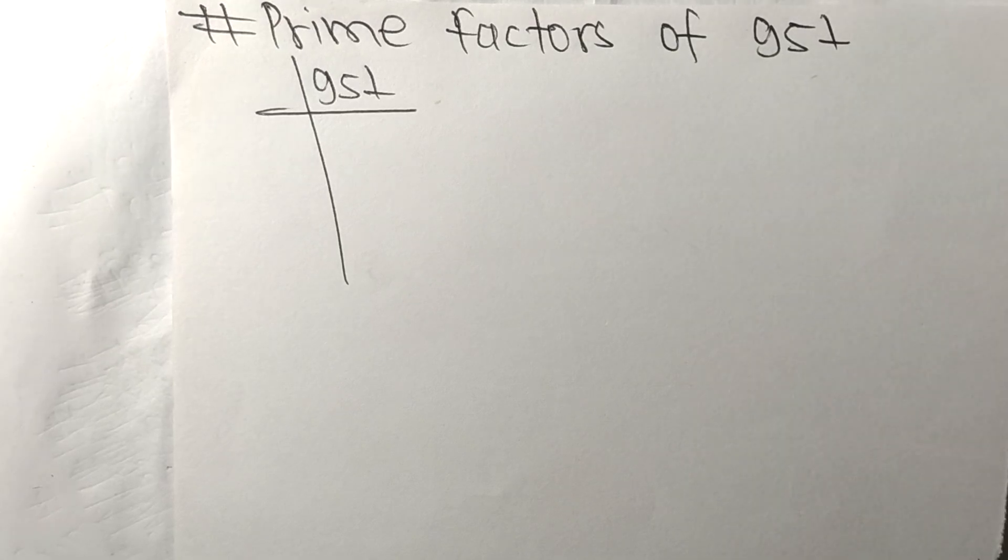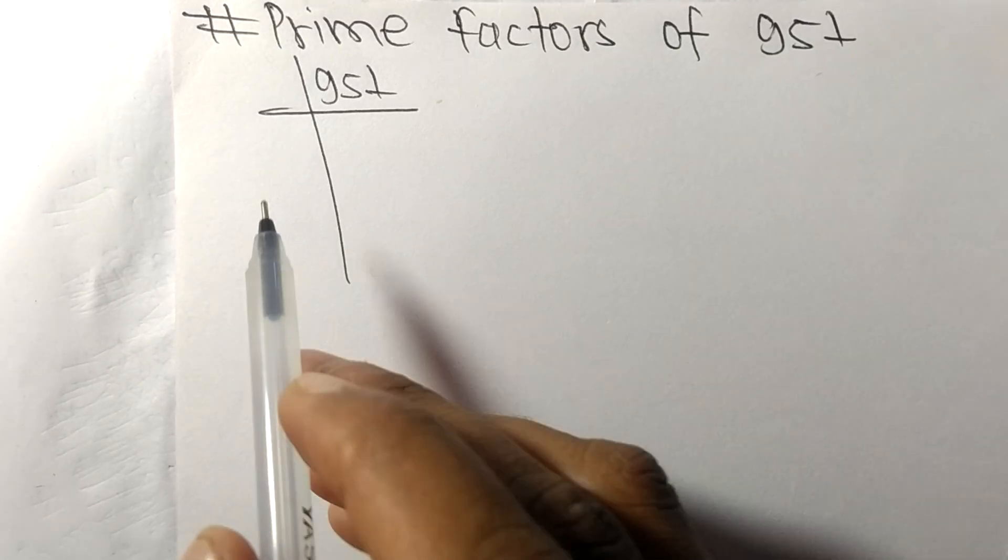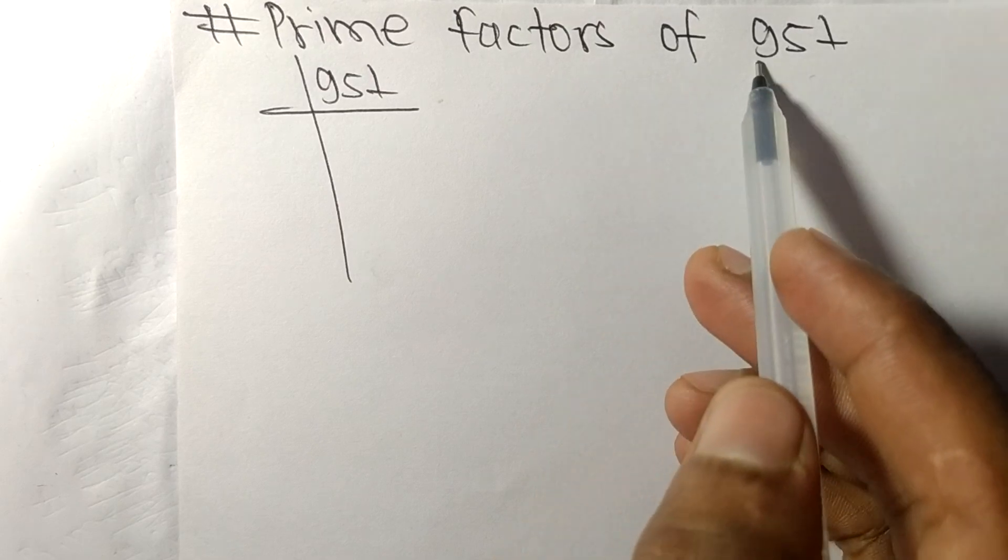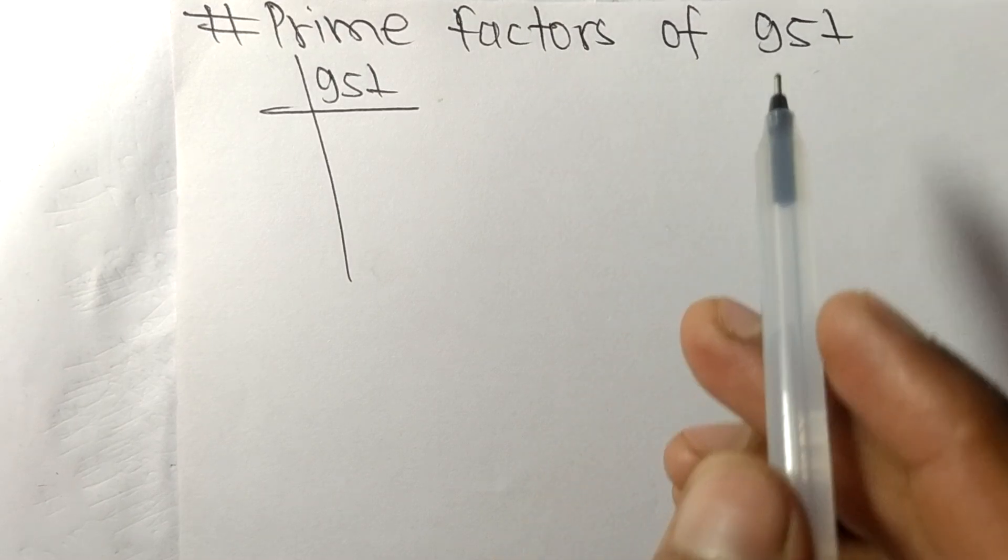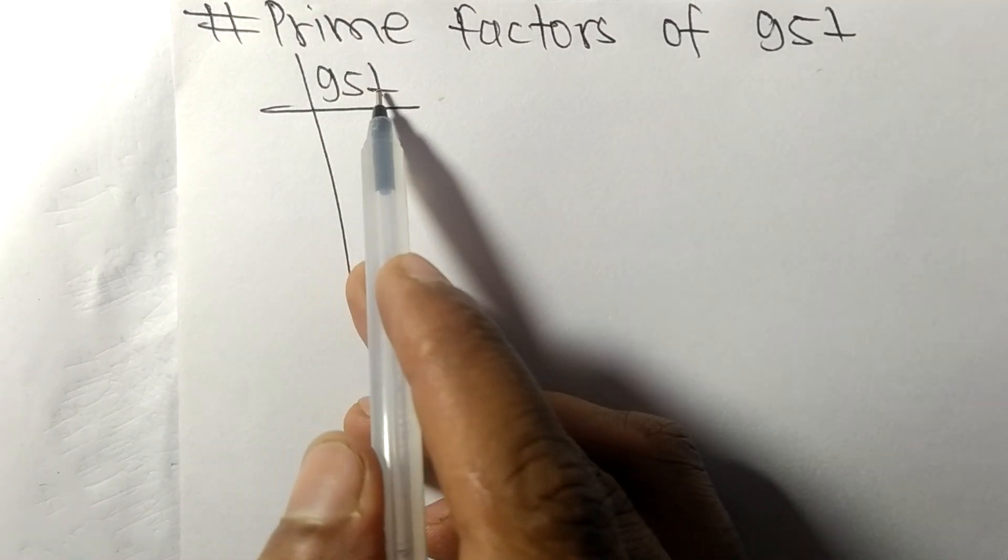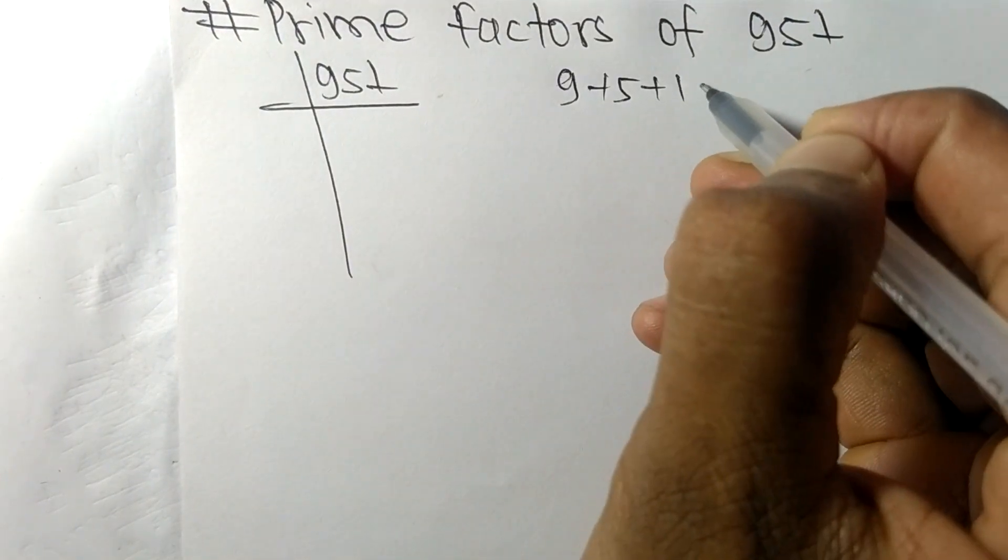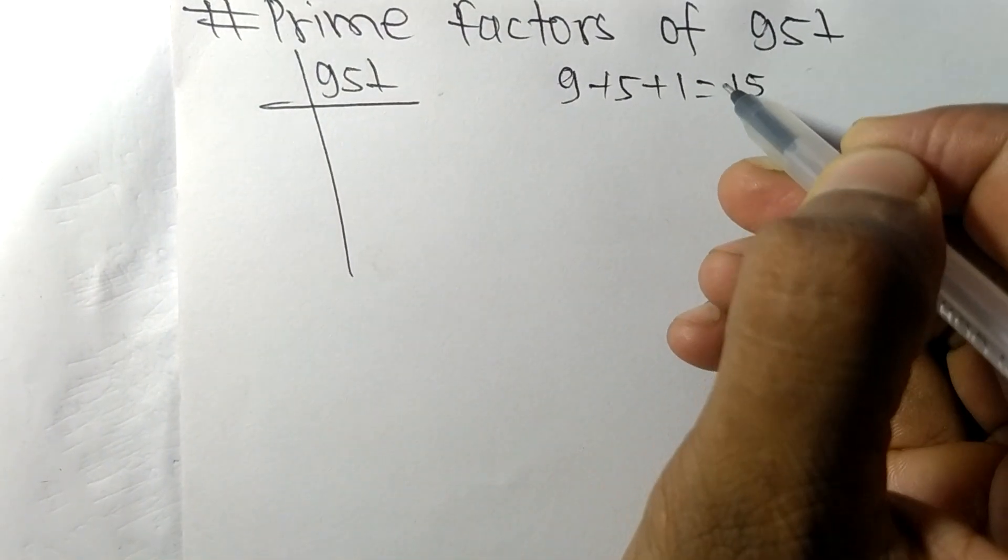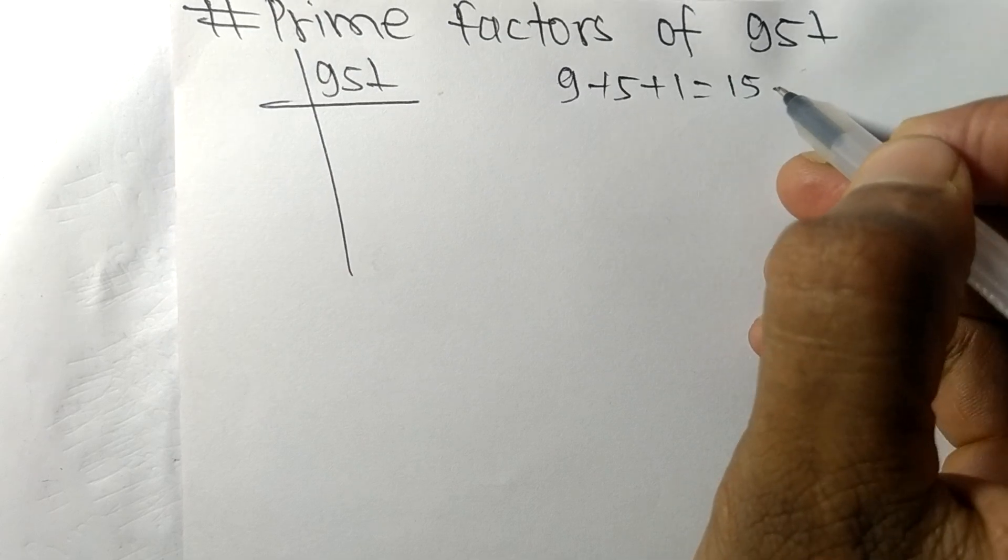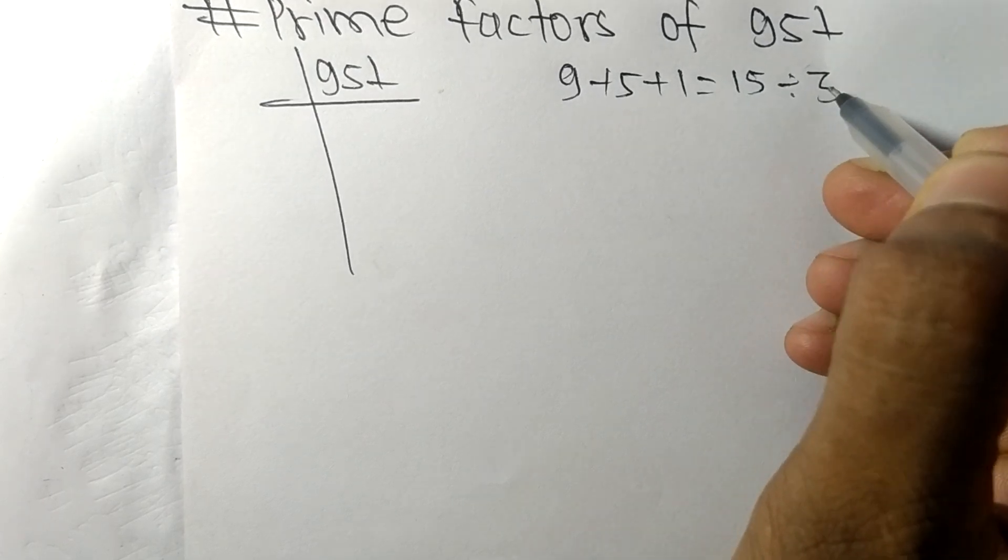Today in this video we shall learn to find the prime factors of 951. When we add all these numbers, 9 plus 5 plus 1, we get 15, and 15 is exactly divisible by 3.